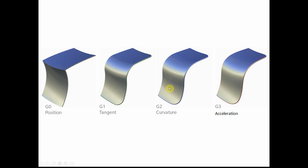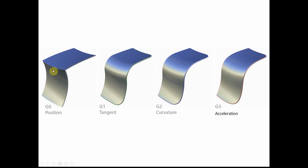G2 is curvature continuity. Again, three surfaces — bottom, top, and then the blend between them. G2 provides much better reflections than G1. With G1, you're going to get blurred reflections, but the blur will just be chopped in half.